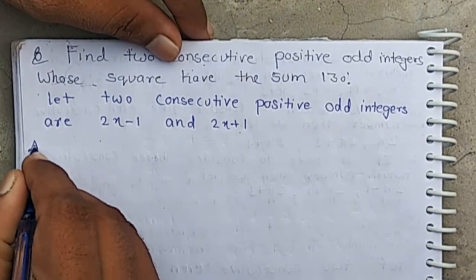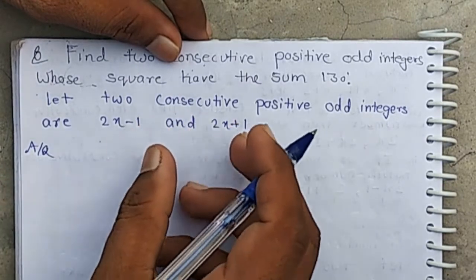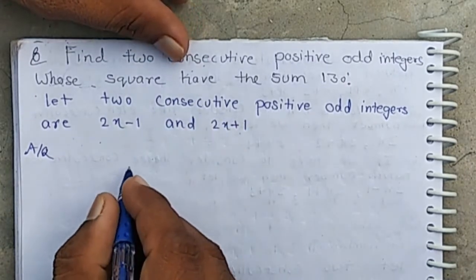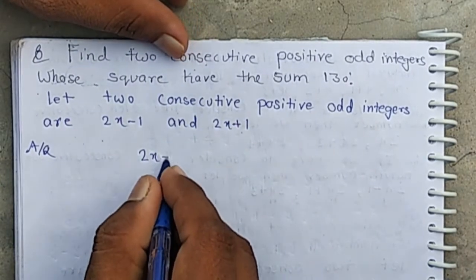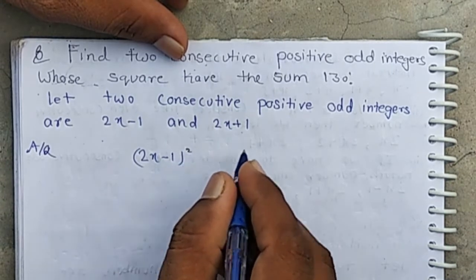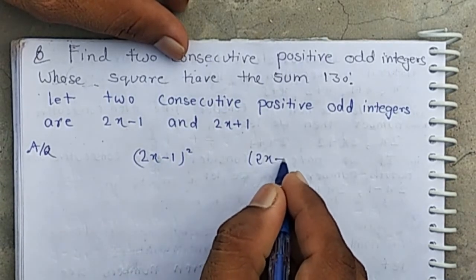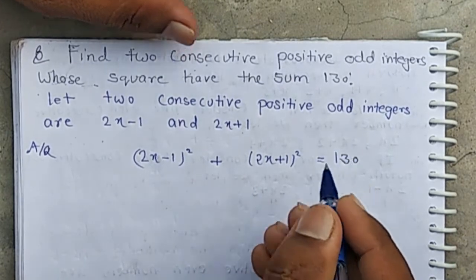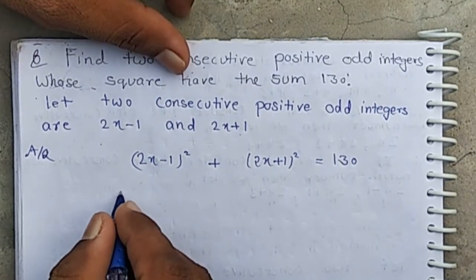According to the question, the sum of the squares equals 130. Now open the bracket.